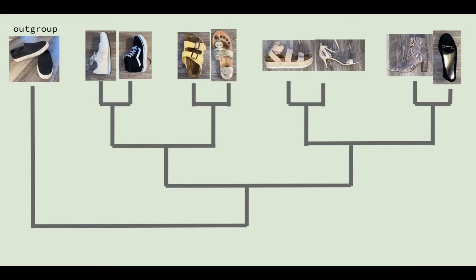The black sneaker diverges into casual and dressy shoes, and then the casual and dressy shoes diverge into open and closed-toed shoes. The casual closed-toed shoes include my lifestyle sneakers and high top sneakers. The casual open-toed shoes include my Birkenstocks or sandals and my jacks or flip-flops. At the right of the tree are my dressy shoes. The dressy open-toed shoes include my platform sandals and my heels, and then the dressy closed-toed shoes are my booties and flats.